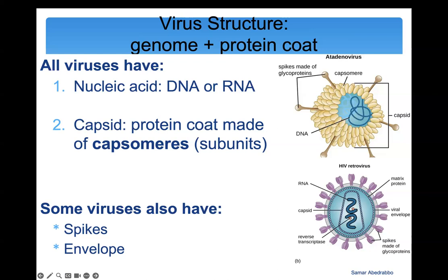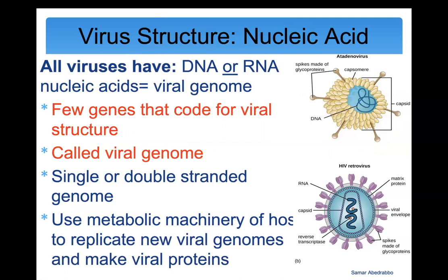Starting with nucleic acid: all viruses have nucleic acid, either DNA or RNA, and we call that the viral genome. If I ask about the viral genome of a coronavirus, I'm asking about its RNA. This viral genome has a few genes important for the virus's structure, survival, and pathogenicity — its ability to make you sick. The genome carries the blueprint for making new viruses. Some viruses have a few genes, others have many.